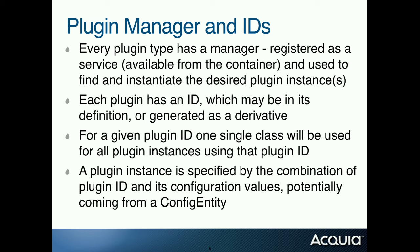A plugin instance is a combination of a plugin ID, a class instance, and configuration values. Those configuration values almost always come from a configuration entity in Drupal 8. So a plugin instance: you instantiate a class, it maps to a particular class name via a plugin ID, feed it some configuration values from a config entity, and that gives you the instance that does one specific thing you want.